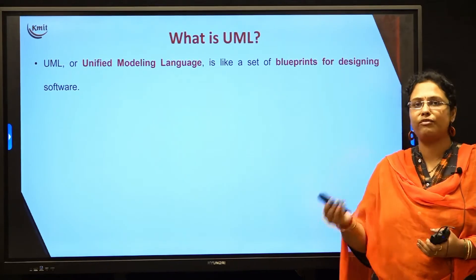These are the various types of things, relationships, and diagrams in UML. Among all nine diagrams, in the next two sessions we will be talking about four important diagrams which you have to draw for the respective project you have selected. Thank you.